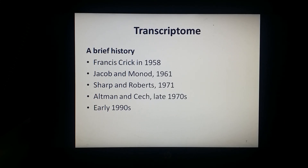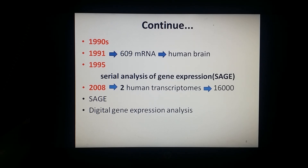In the early 1990s, a number of scientists independently observed that RNA inhibits gene expression in plants and fungi through unknown mechanisms. The word 'transcriptome' was first used in the 1990s, and the first attempt at capturing a partial human transcriptome was published in 1991, reporting 609 messenger RNA sequences from the human brain.